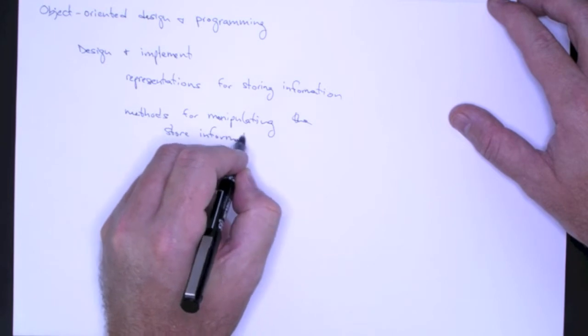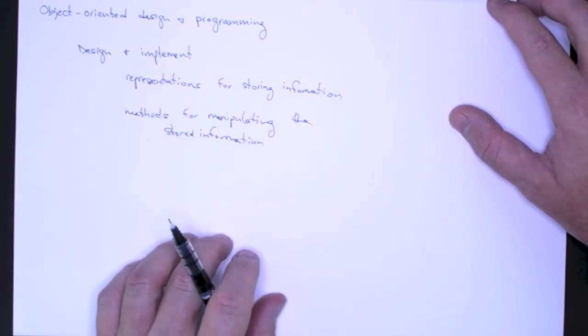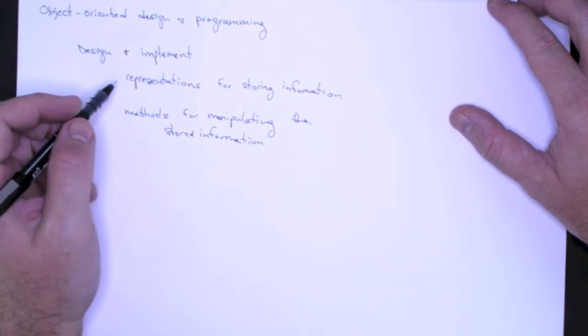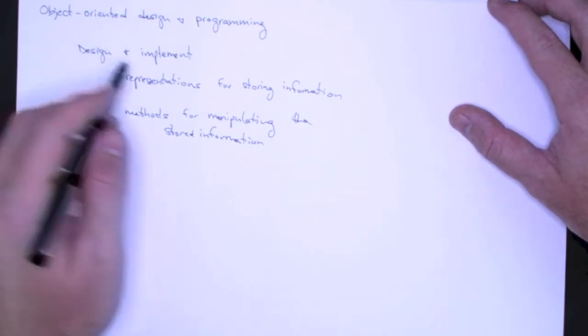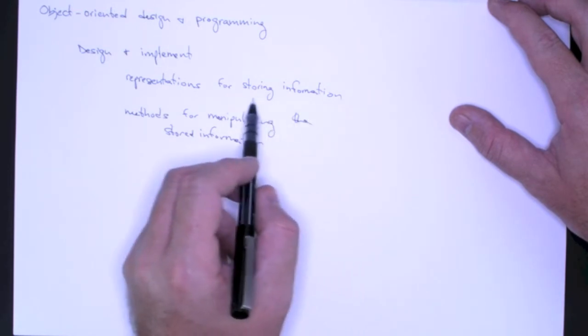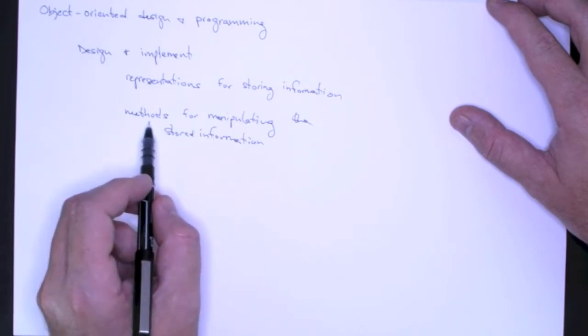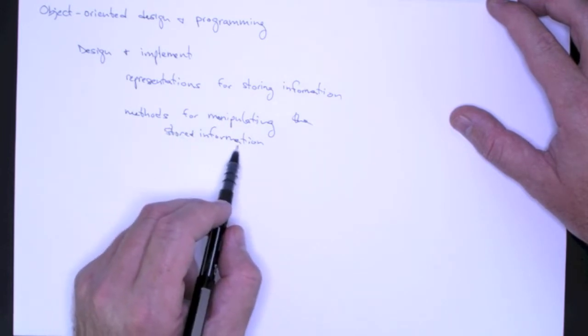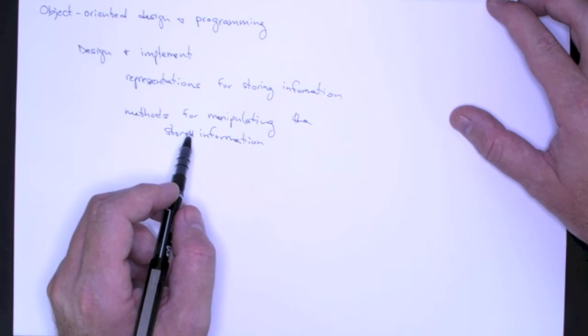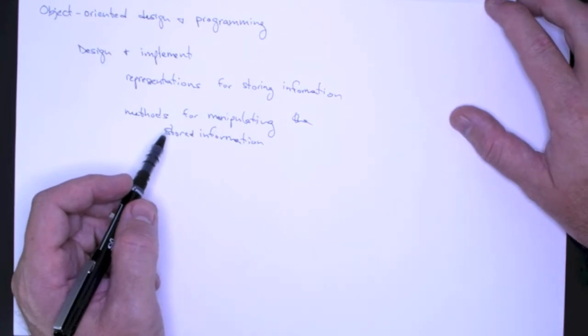Now this is a very abstract notion of what we're talking about, but just to ground it in a concrete example, maybe the information I want to store is about a student in my class or the grades for an assignment. Then I might need some method or routine for manipulating the student's grade on a particular assignment or averaging the grades from all the assignments. So that's an example.